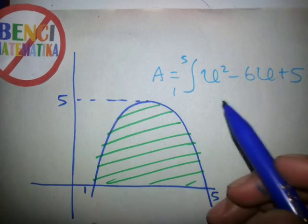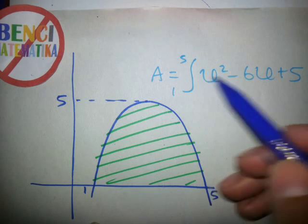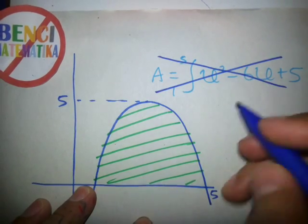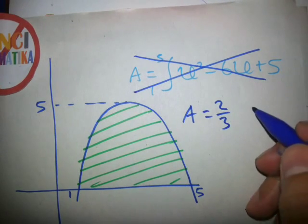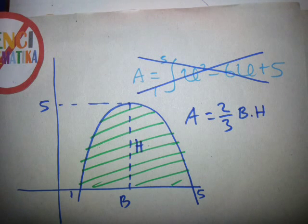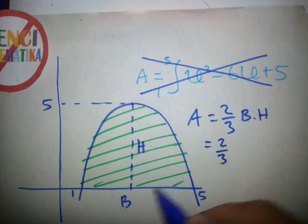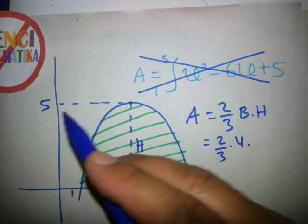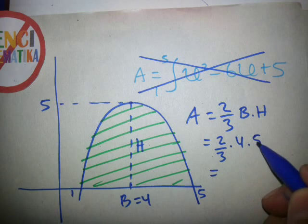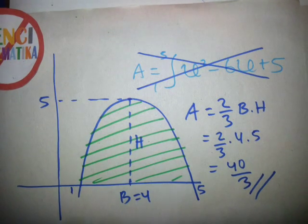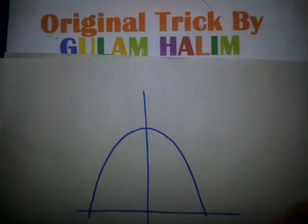We want to find the area of the shaded region. Usually we use integration, but I don't want to use integration. The formula is 2/3 times base times height — this is the base, this is the height. Base equals 4 (5 minus 1 equals 4), height equals 5. So the area equals 2/3 times 4 times 5 equals 40/3.